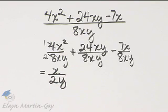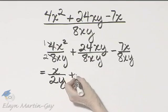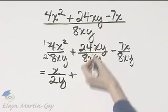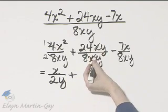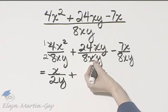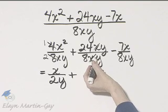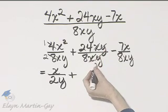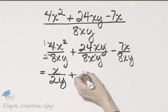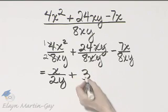So we simplified that term. Plus, here x's divide out—it's a power of 1 over a power of 1, and remember 1 minus 1 is 0, and x to the power of 0 is simply 1. The y's divide out, same reason. 24 divided by 8 is 3.